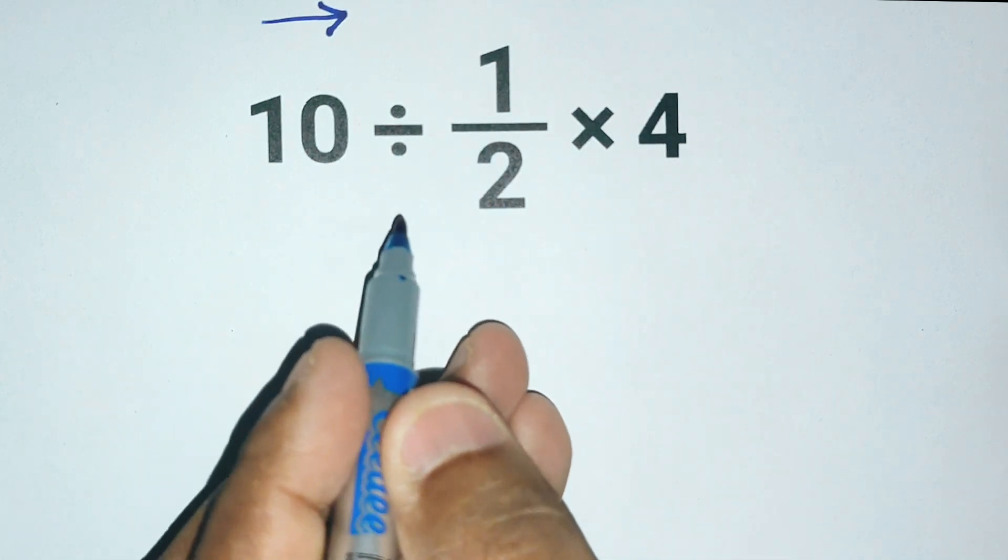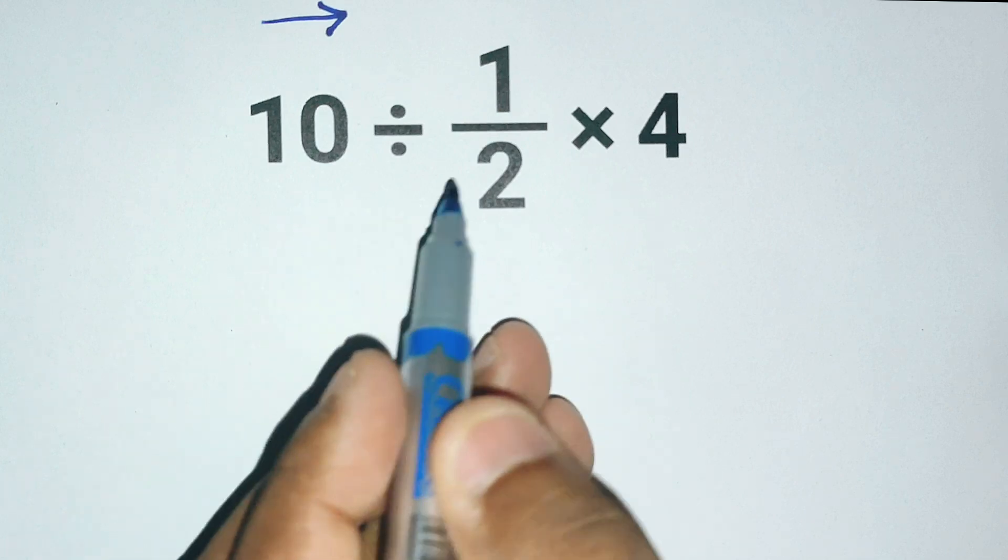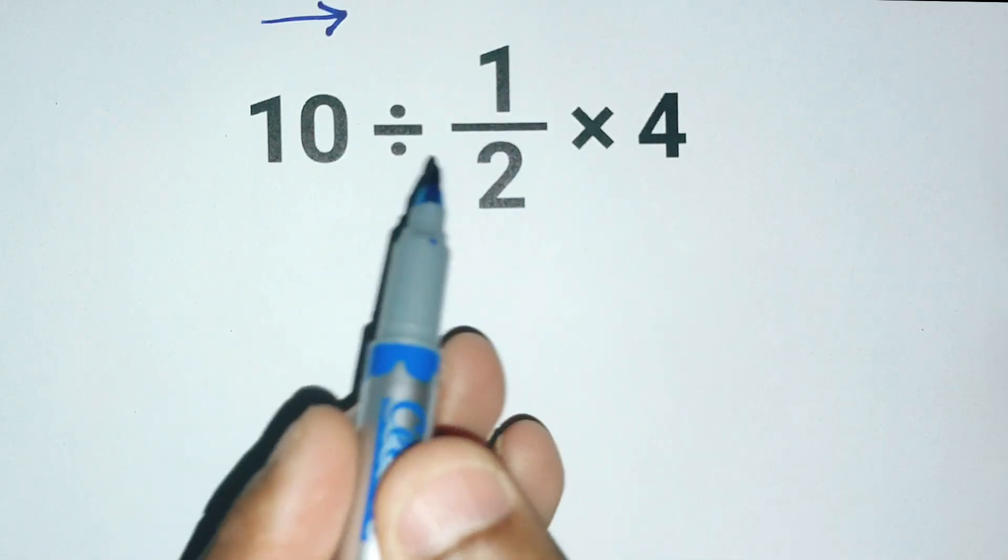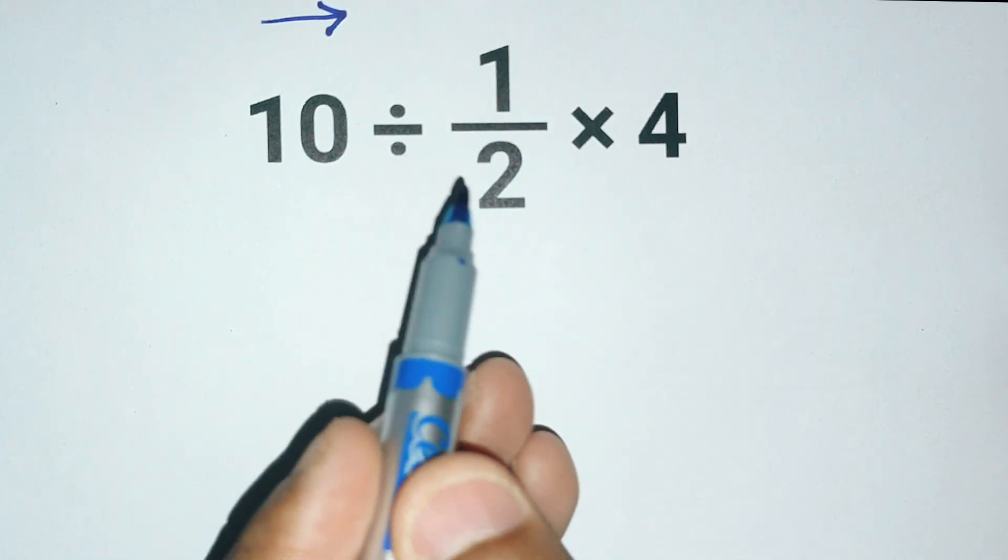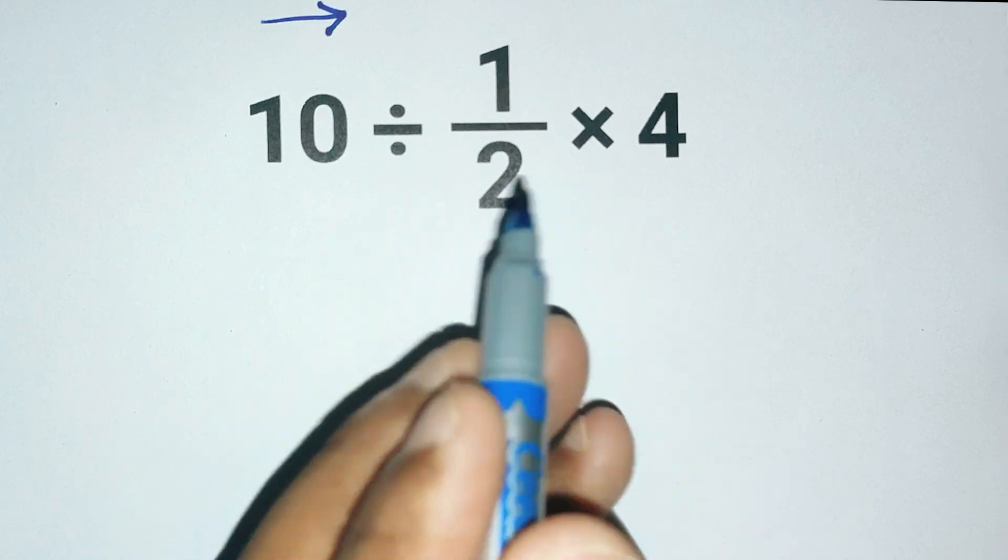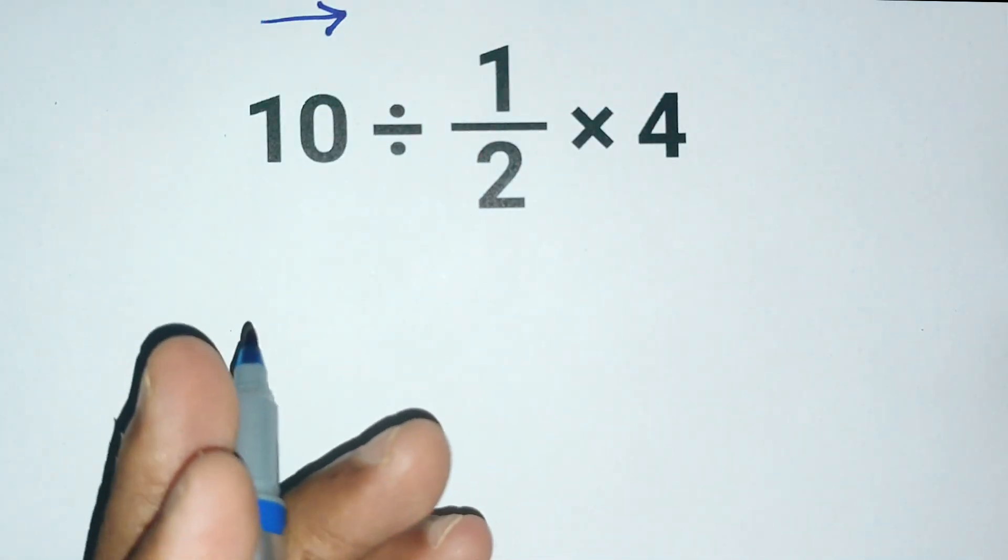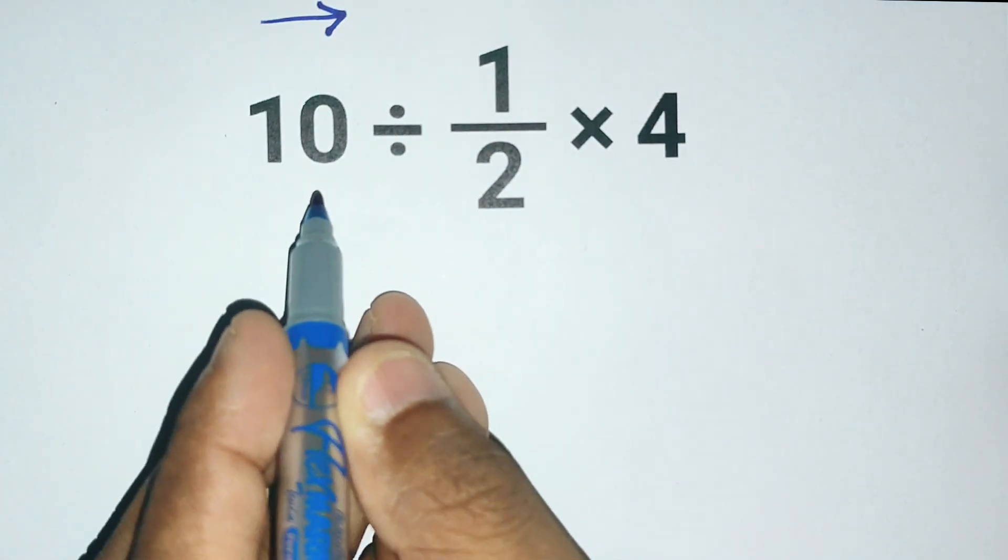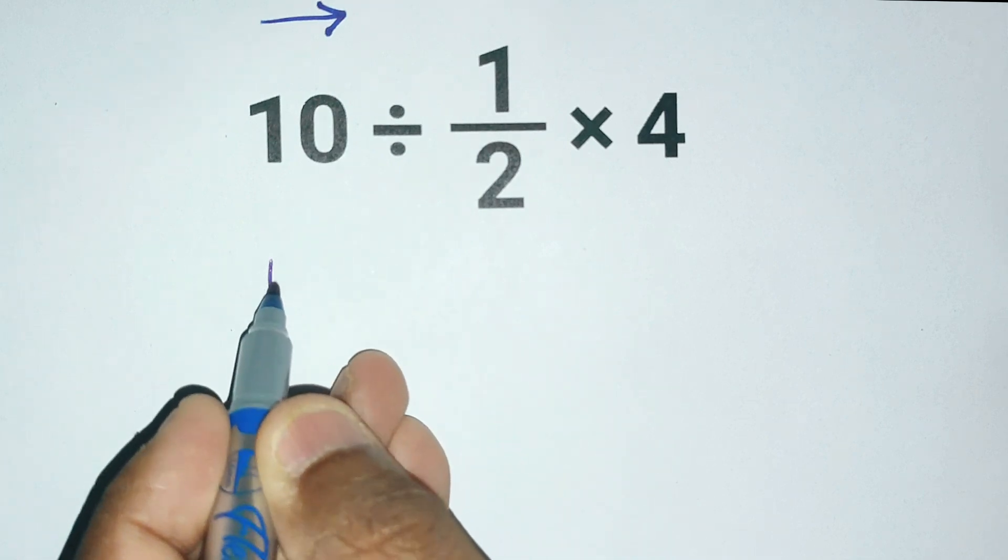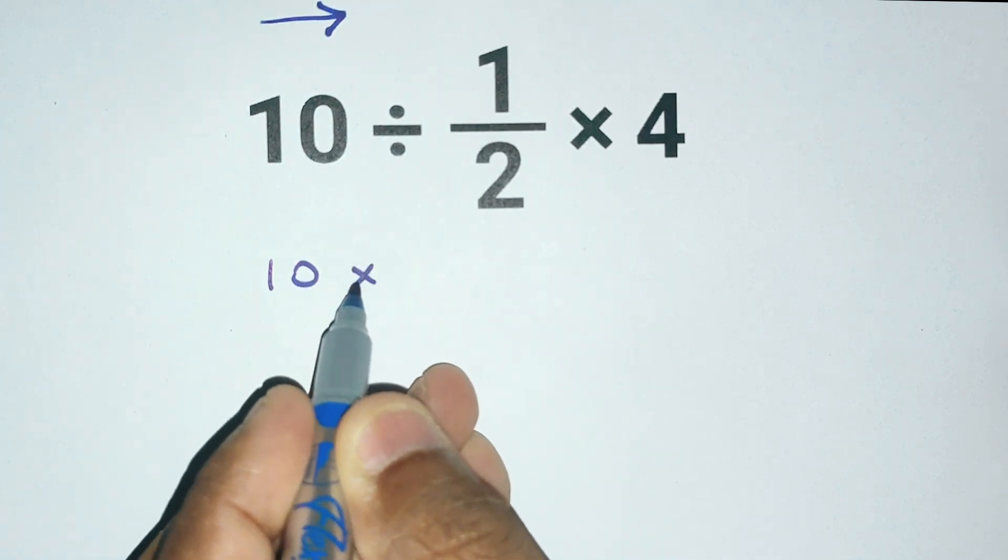Now dividing by a fraction is the same as multiplying by its reciprocal. That means we flip the fraction upside down, so 10 divided by 1 over 2 becomes 10 times 2 over 1.